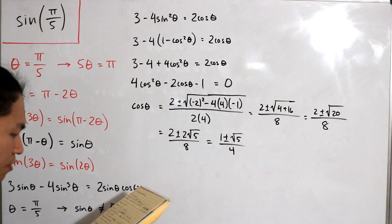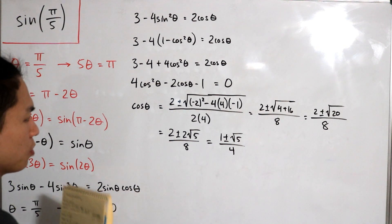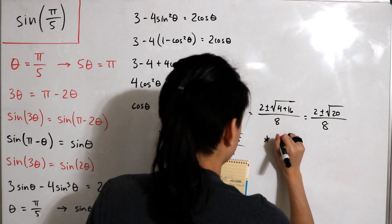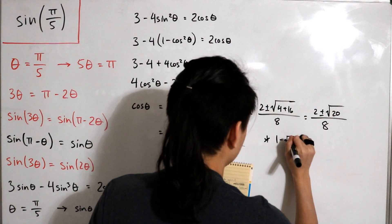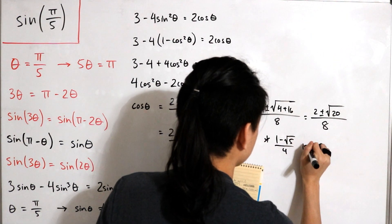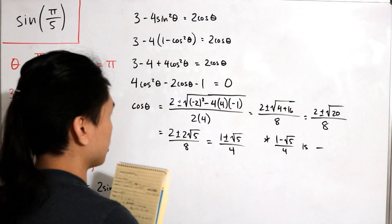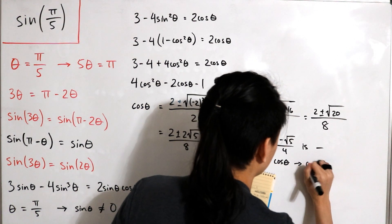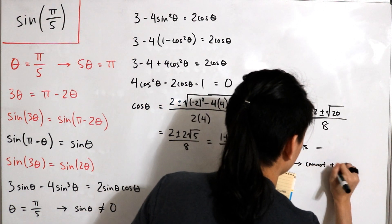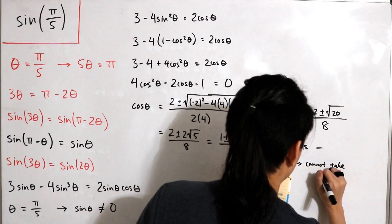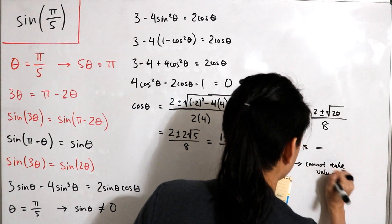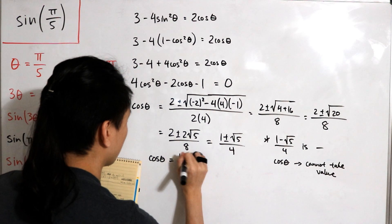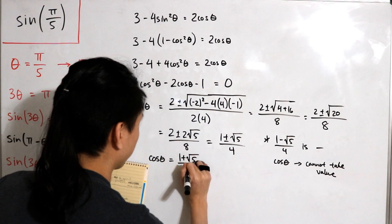However, because we have plus or minus, we need to consider both solutions. Since one minus the square root of five divided by four is negative — and cosine of an acute angle cannot be negative in this case — cosine θ cannot take that value. Therefore, we are left with the positive solution: cosine θ equals one plus the square root of five, divided by four.